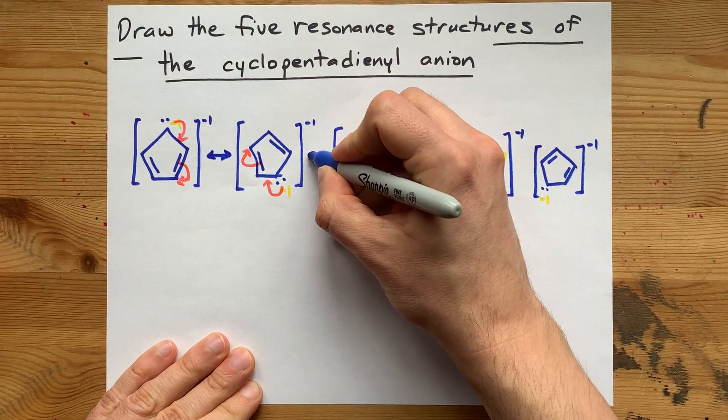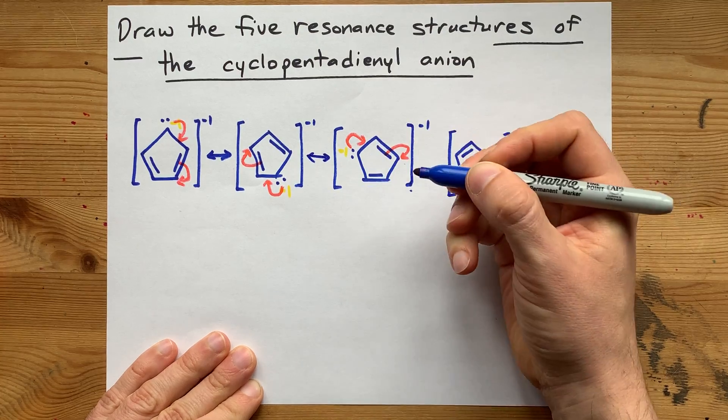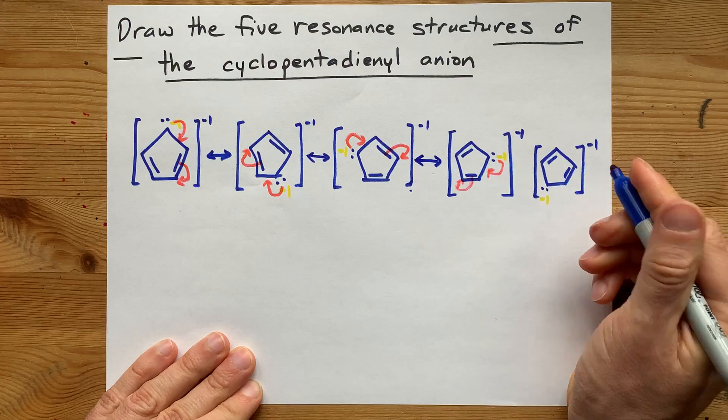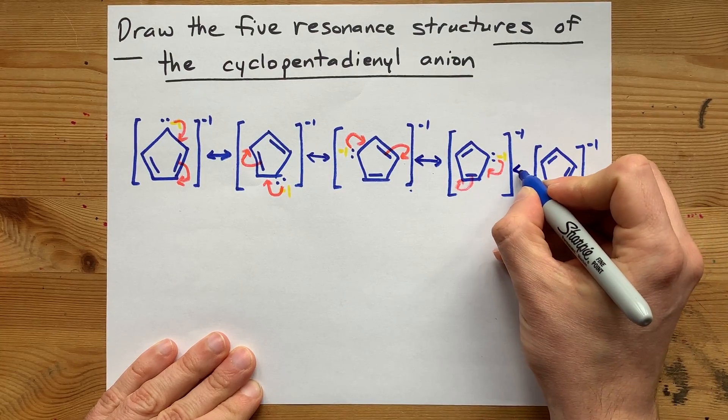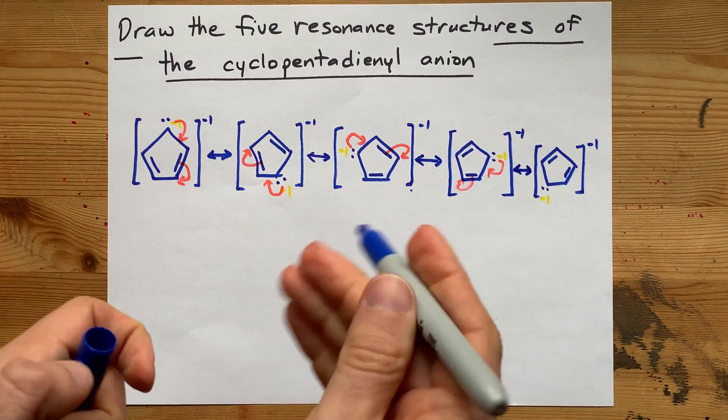Double-headed, but there's a single bar between them. It's not an equilibrium arrow. It's not a reaction arrow. A double-headed, single-line arrow is a resonance arrow, and it shows that all of these are interchangeable with each other.